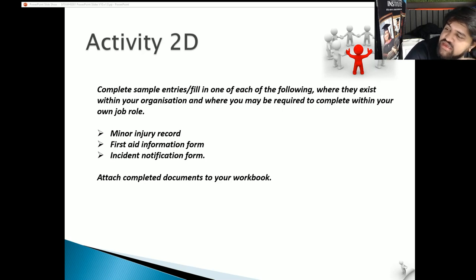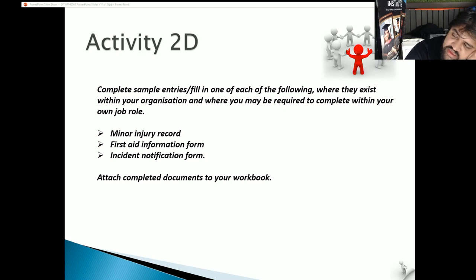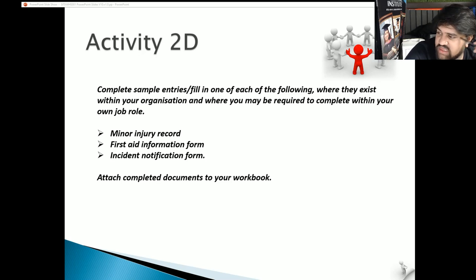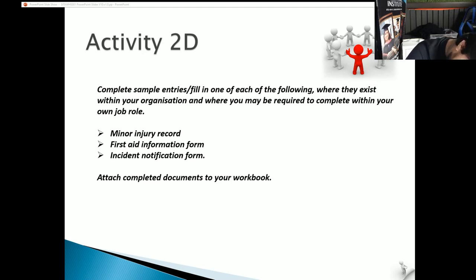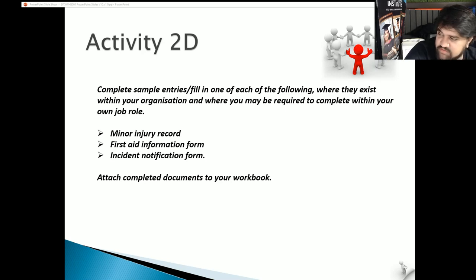An incident notification form includes event type, incident outcome, incident details, the injured person's details, employment details of the worker involved, injury details, employer details, notifier details, and signatures of relevant persons. Activity 2D: Complete the three templates in your workbook. For the minor injury record, pick three employees on three different occasions - put the dates, names, type of injury such as a sprain, burn or cut, the body part injured, and the treatment given such as a bandage or cold packs. For the first aid information form, include the person's name, age, gender, work area, whether they are a worker or visitor, pre-existing medical conditions, and incident details including type of injury, how it occurred, time and date, witnesses, first aid administered, and details of the first aid officer.